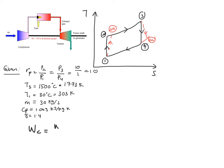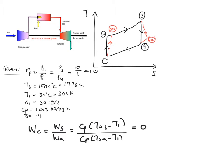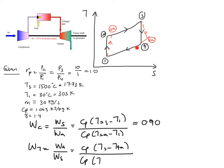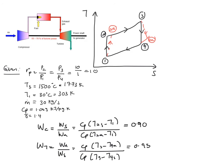You are also given the isentropic efficiency of your compressor, which is W_isentropic over W_actual. Because you are dealing with an ideal gas, you make use of Cp times change in T, giving: Cp(T2s − T1) over Cp(T2a − T1), which is equivalent to 0.90 or 90%. You are also given the efficiency of your turbine, which is defined as work actual over work isentropic: Cp(T3 − T4a) over Cp(T3 − T4s), and the value is 0.95.